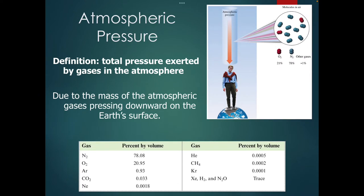You may have heard of atmospheric pressure. Atmospheric pressure is the total pressure exerted by gases in the atmosphere. Essentially, you sitting on your chair have pressure sitting on top of you — the atmosphere is sitting on top of you and exerting pressure on your head and shoulders, because there's oxygen, nitrogen, carbon dioxide, and all kinds of things in the air that are continually bombarding you, even though you don't notice. Due to the mass of all atmospheric gases pushing down on Earth's surface, that's where we get atmospheric pressure.